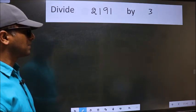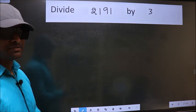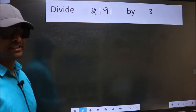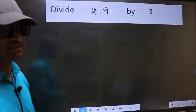Divide 2191 by 3. While doing this division, many do this mistake. What is the mistake that they do? I will let you know. But before that, we should frame it in this way.